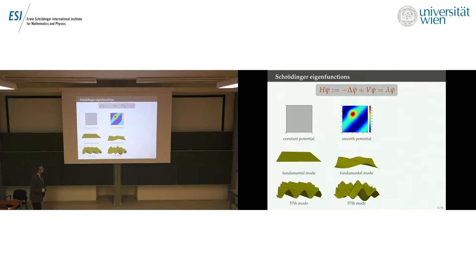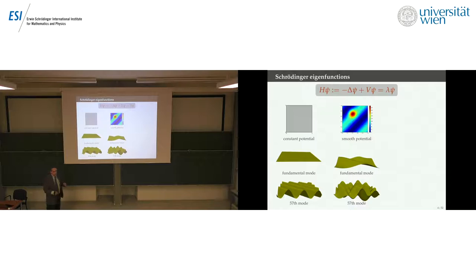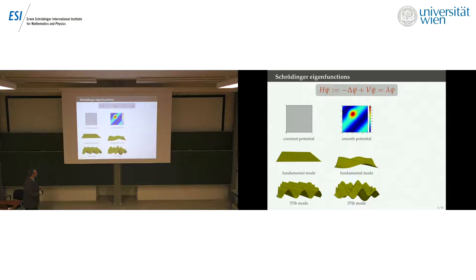Let's look at quick examples of the Schrödinger eigenvalue problem. Suppose first the potential is zero — we're just talking about eigenfunctions of the Laplacian. On a square with periodic boundary conditions, the first eigenvalue is zero with a constant eigenfunction. The other ones are all of the form sin(mx)cos(my) or sin(mx)sin(my) — products of trigonometric functions. There's the fundamental mode, and say the 57th mode is some product of trigonometric functions.